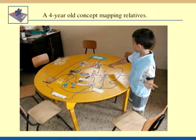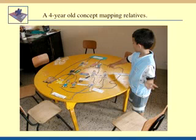This slide shows four-year-old children in a school in Costa Rica building a concept map of relationships, showing parents and aunts and uncles. And they're not only learning the names of these relationships in Spanish, but also in English. And this concept map is shown in English.